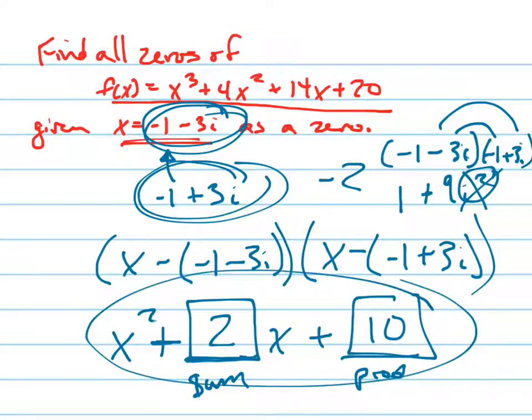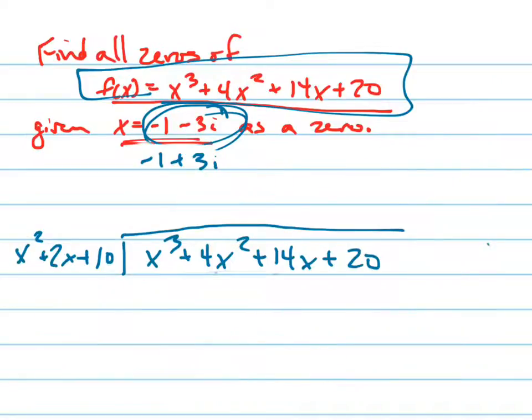So if that is my product of those zeros, then what I can do with this is use long division to find out what the other factor is. So let's do that as well. Let's do this.